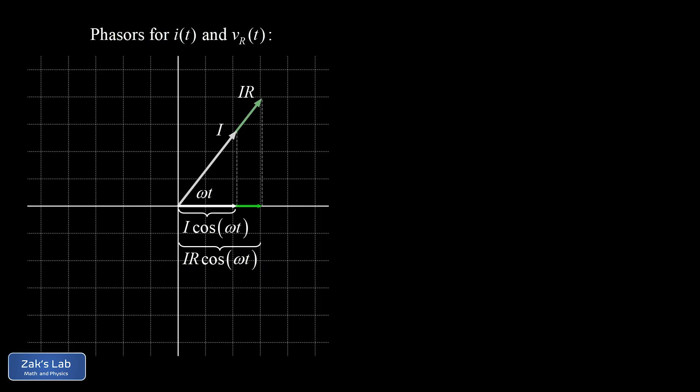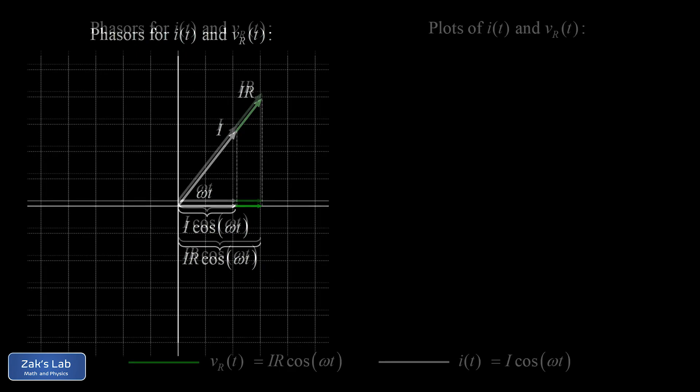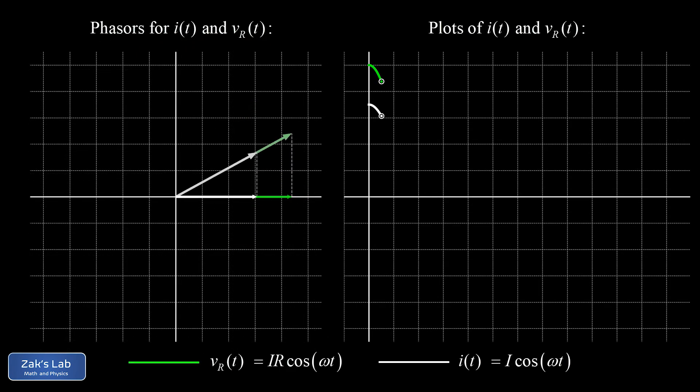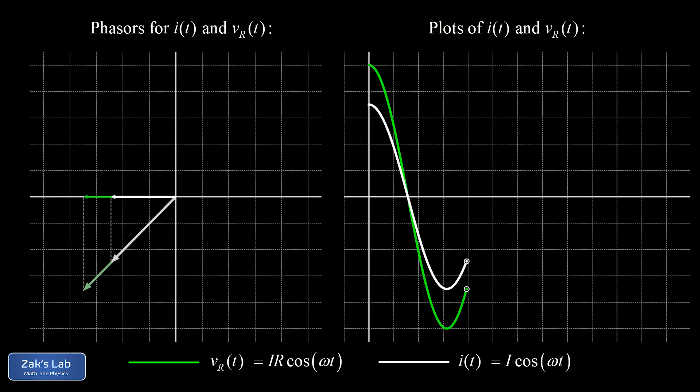And recall, this diagram is actually rotating to produce the corresponding sinusoidal functions. So as the animation progresses starting from t equals zero, we see the current as a function of time. And that's a pure cosine function with amplitude big I. And we see the voltage across the resistor as a function of time. And that's in phase with the current cosine, but it has an amplitude of big I times big R.